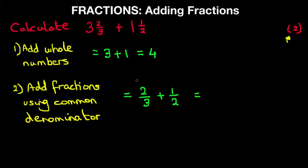Now let's look at the first fraction, two-thirds. In order for the denominator to equal six, we have to multiply by two. If we multiply the denominator by two, we also have to multiply the numerator by two. So the two-thirds becomes two times two is four and three times two is six.